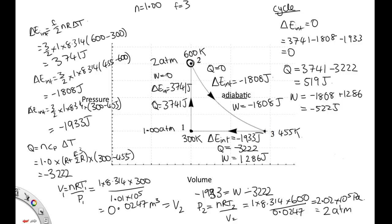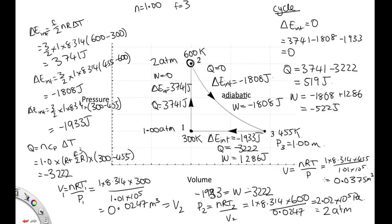Then we're asked to calculate the pressure and volume for state 3. It has the same pressure as state 1, so the pressure equals 1 atmosphere. Using the ideal gas law, the volume equals nRT over P, which is 1 times 8.314 times 455 over 1.01 times 10 to the 5, giving 0.0375 meters cubed. That's the volume at state 3. In an exam, you'd want to label these as answers to parts A, B, C, and D, but it's always a good idea to write what you know on the diagram.